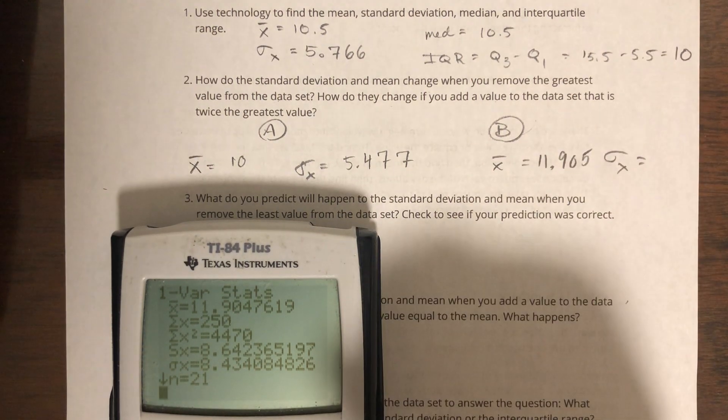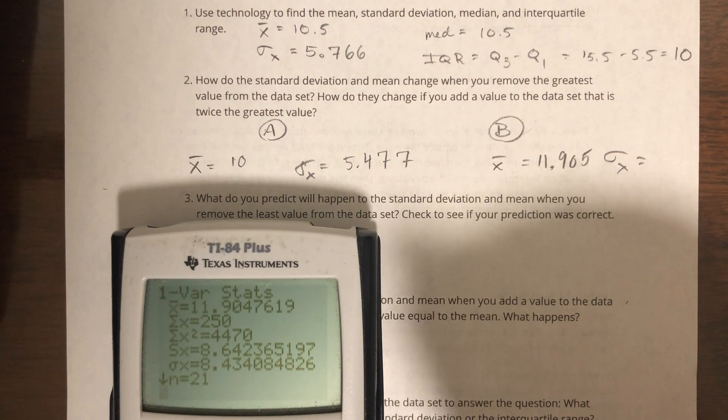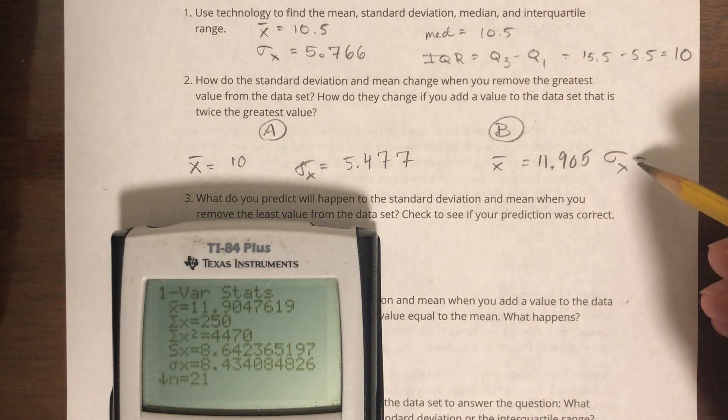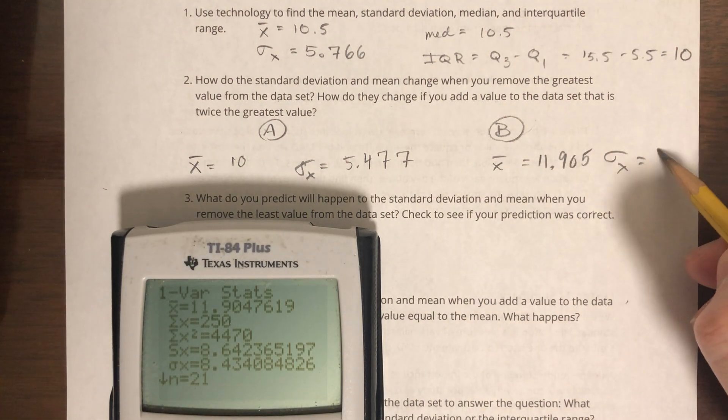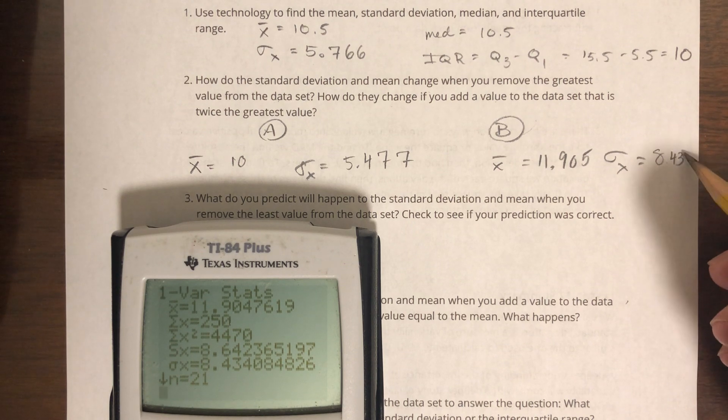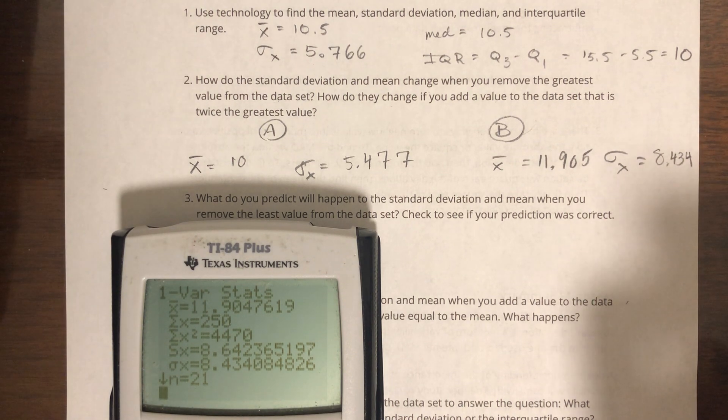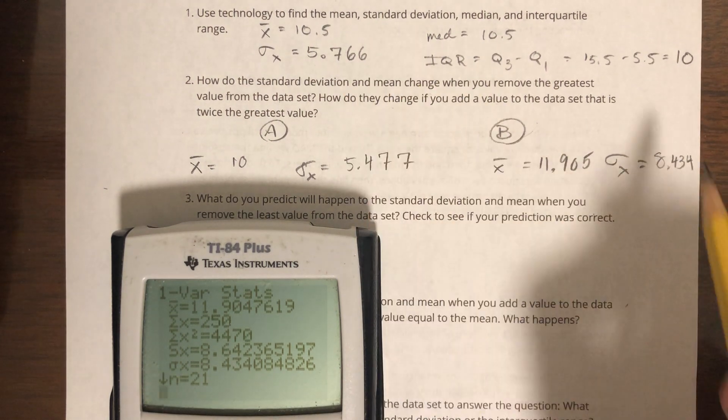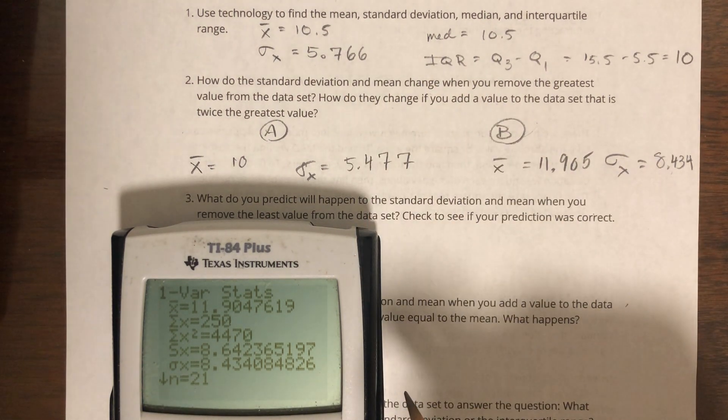11.905, so we've gone up quite a bit from 10.5. And my standard deviation is 8.434. Wow, that really went up a ton. We were at 5.76, now we're all the way up here.